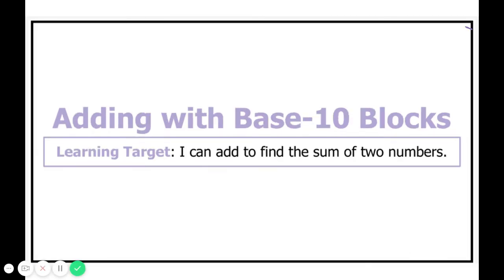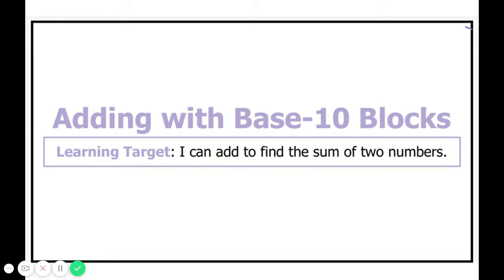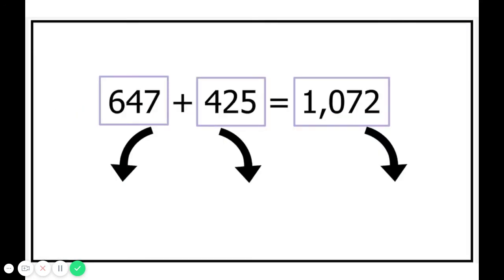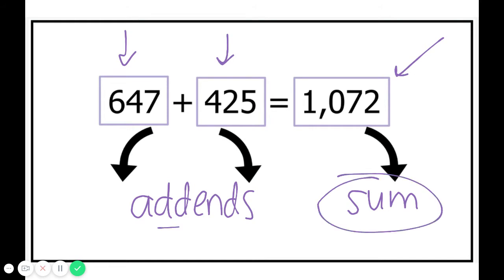We are going to be adding with base ten blocks. Our learning target says I can add to find the sum of two numbers. Let's discuss some vocabulary before we get started. We are going to start with the pieces that we are adding together — in this case 647 and 425 — and those are called addends. The answer to an addition problem, in this case 1,072, is known as the sum. Today we are going to be searching for the sum when we put two addends together.